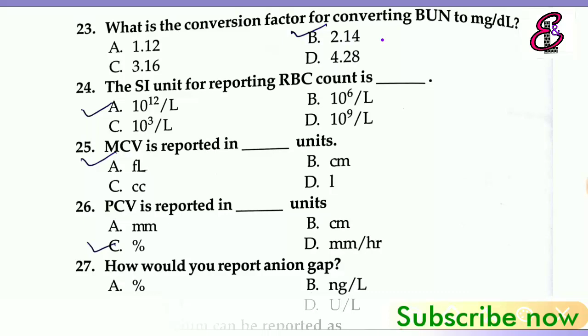Next question: The SI unit for reporting RBC count is? The SI unit for reporting RBC count is 10^12 per liter, 10^12 per liter.